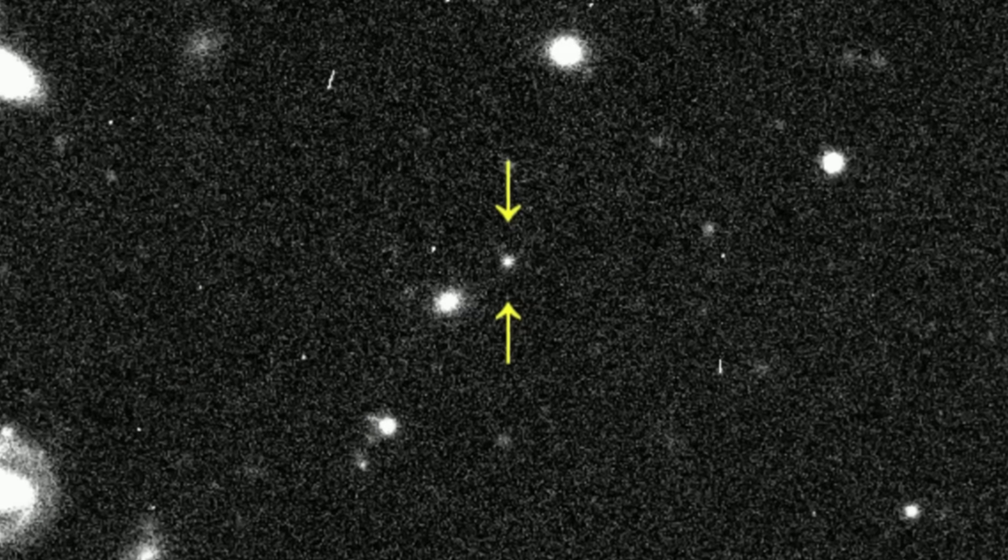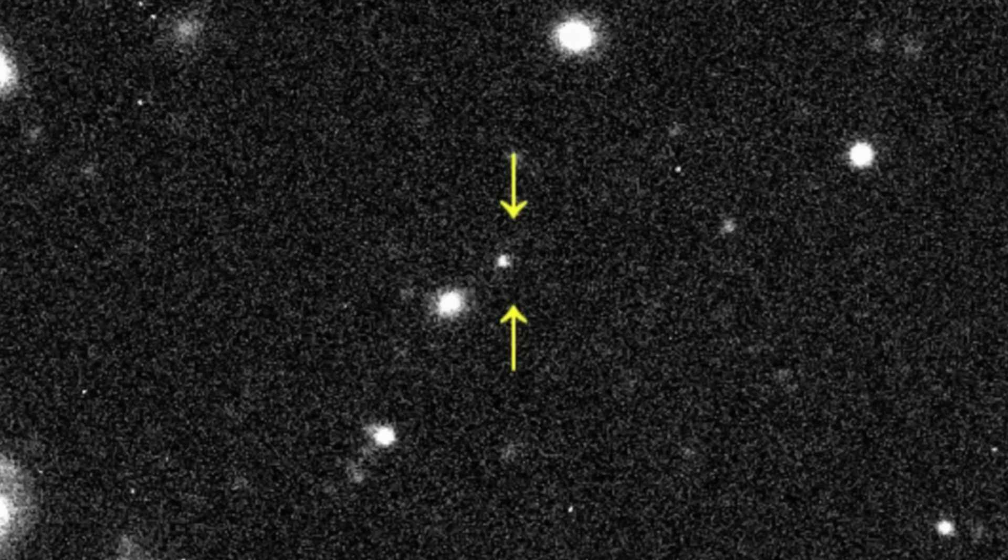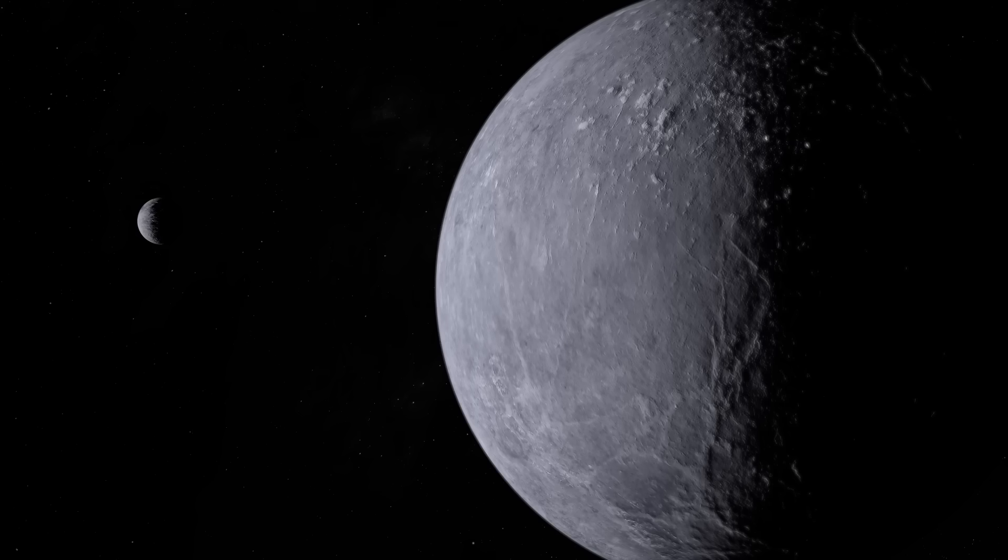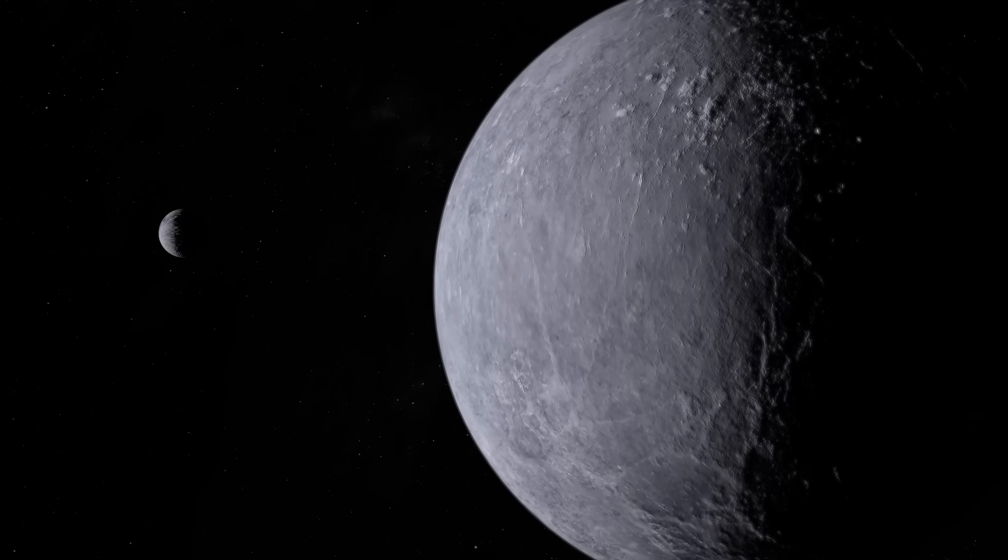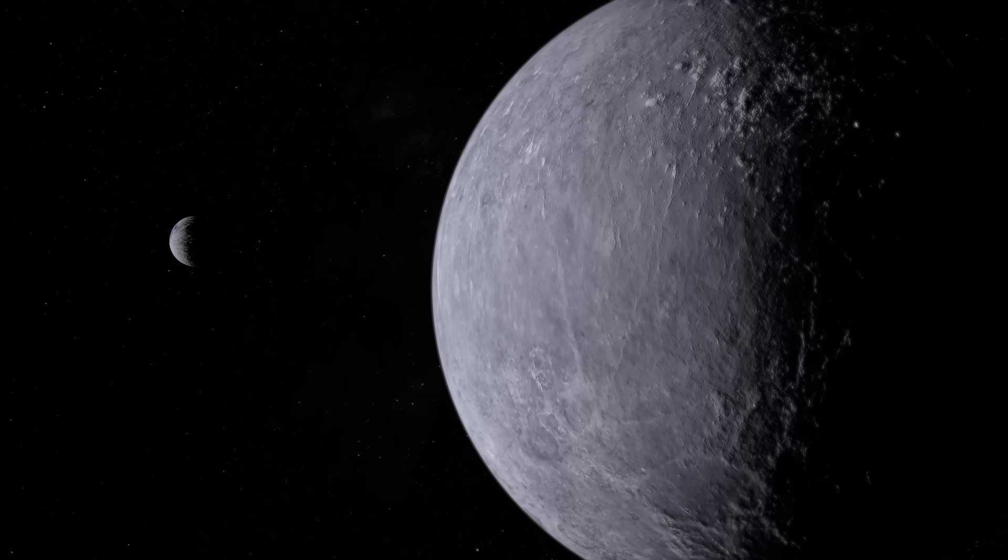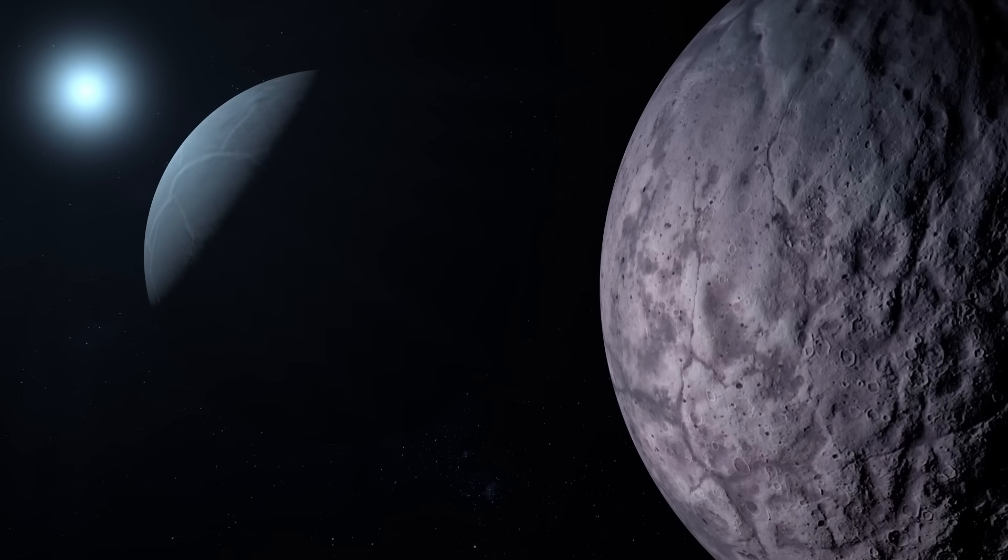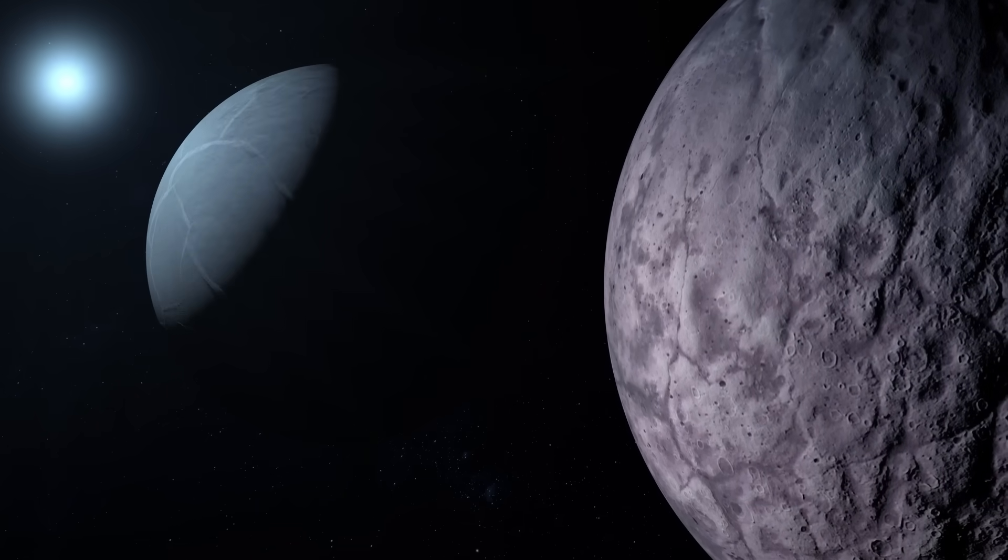Either this object is a fluke, or the Planet Nine model needs serious revision. And it doesn't stop there. 2017 OF 201 spends only about one percent of its orbit close enough to be seen, which means we may have just caught it at the right moment. And if that's the case, it could be just the tip of the iceberg, suggesting there might be dozens, maybe even hundreds, of other objects out there with similar orbits and sizes still hidden in the dark.